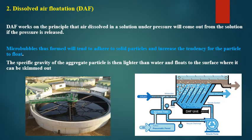Grit chambers are shallow rectangular tanks in which the velocity of flow is reduced, allowing organic materials to settle out. Stone-like grits are used through which effluent water is passed, acting as a filter to separate fats and tissues from the liquid effluent. The second technique for primary treatment is dissolved air flotation (DAF), which works on the principle that air dissolved in solution under pressure will come out if the pressure is released. Micro-bubbles adhere to solid particles, increasing their tendency to float; the specific gravity of the aggregate particle becomes lighter than water, allowing it to be skimmed off the surface.